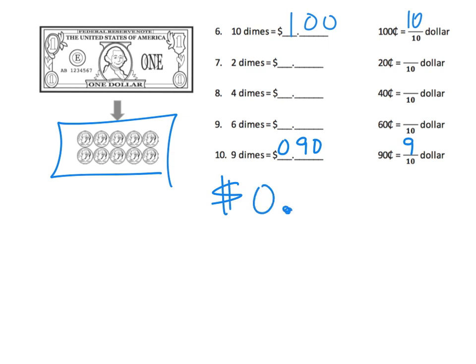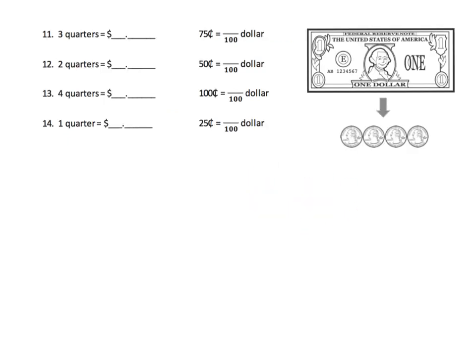Nine dimes equals zero dollars and ninety cents. That leading zero is not necessary, but we include it customarily to say we have zero dollars and ninety cents. We can also connect this with quarters.